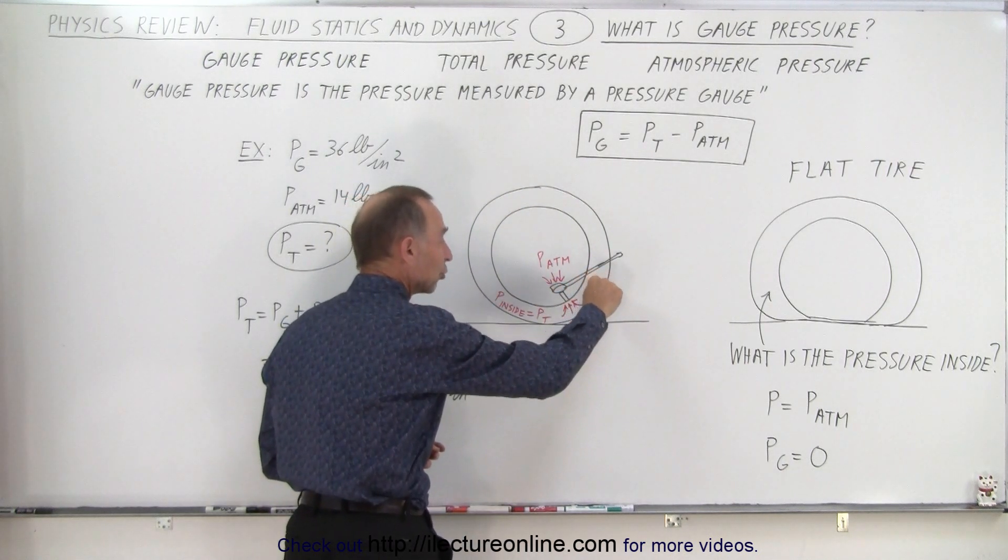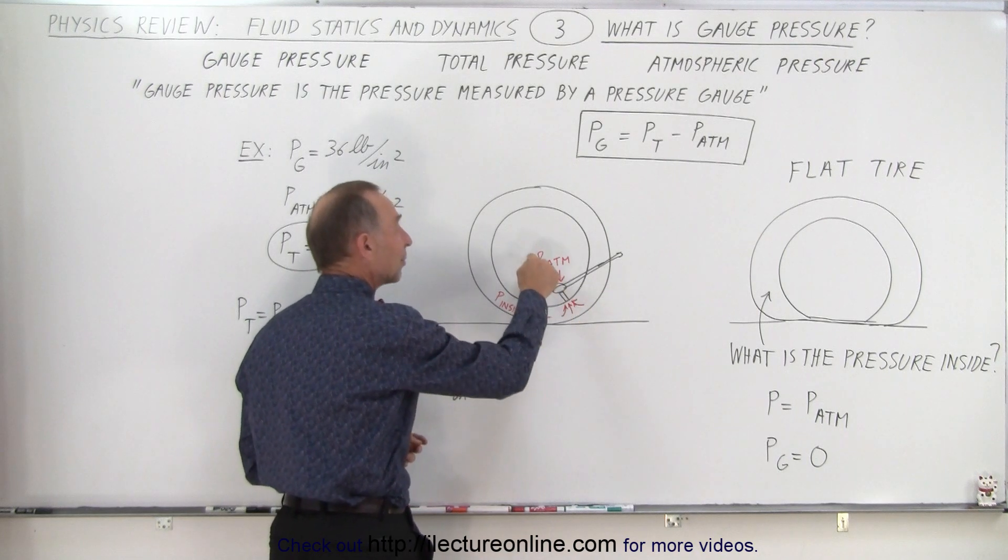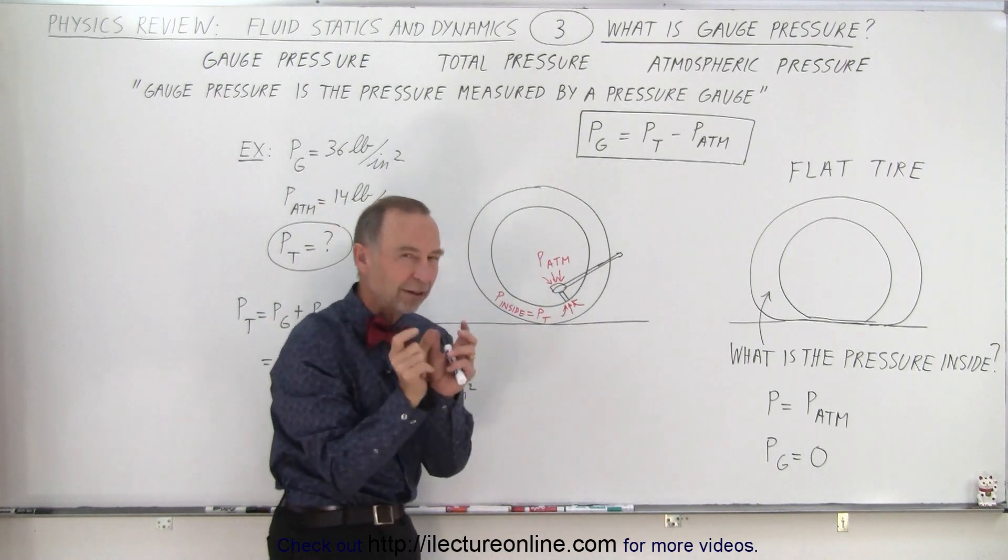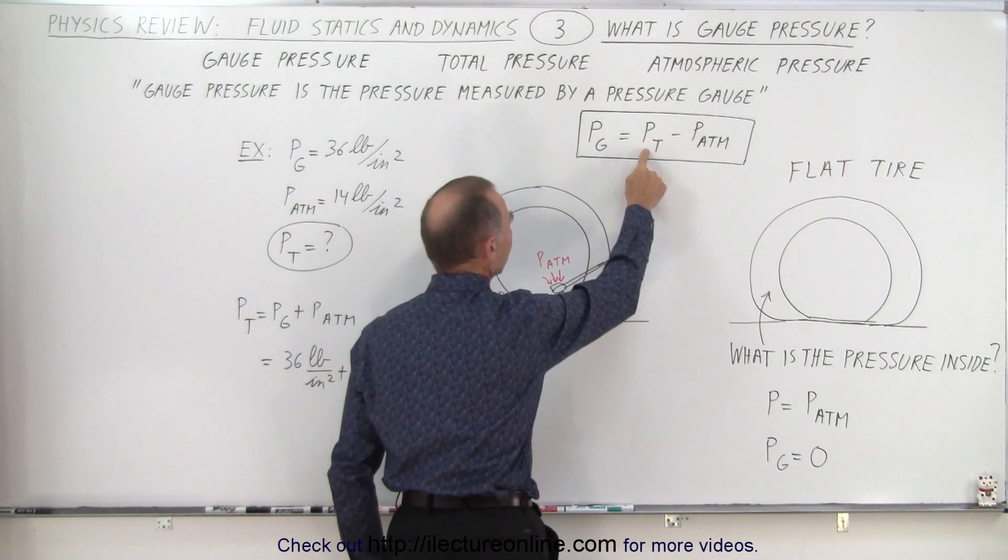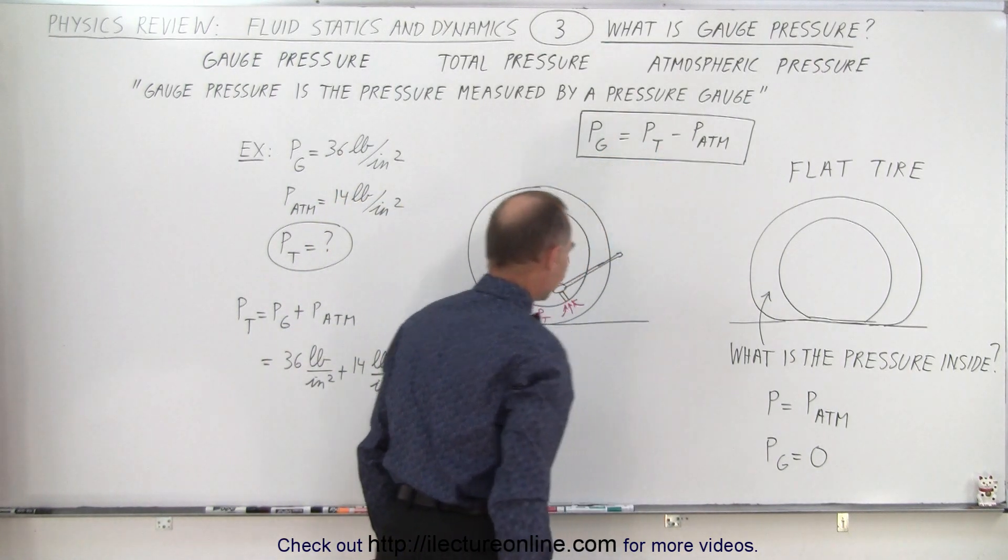So the gauge pressure will measure the total pressure minus the atmospheric pressure. It will measure the difference between the two. So the gauge pressure then becomes the total pressure minus the atmospheric pressure.